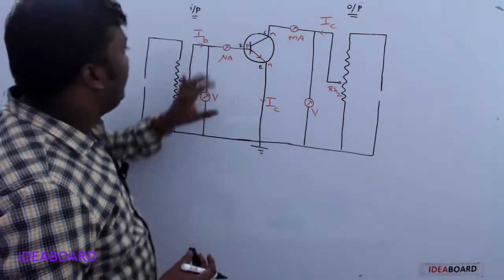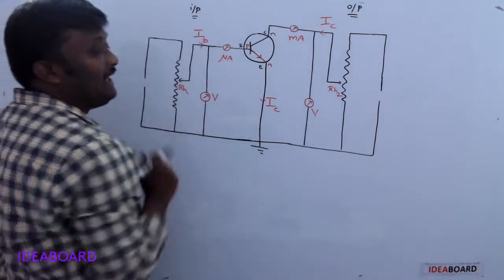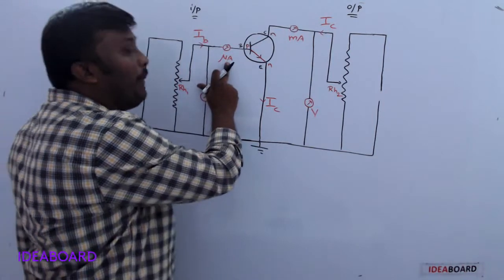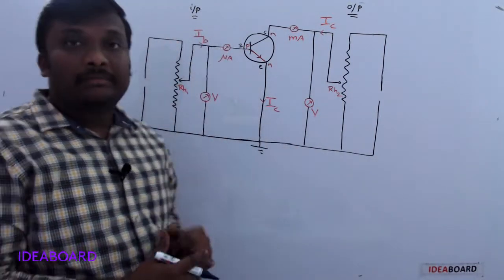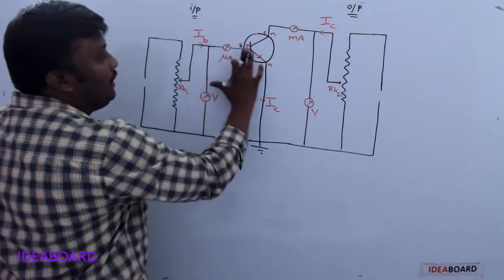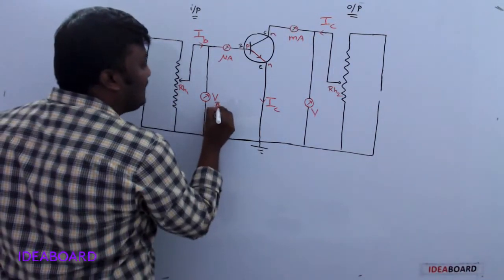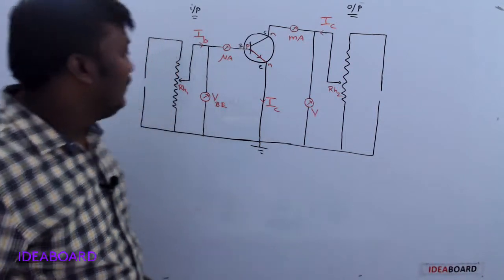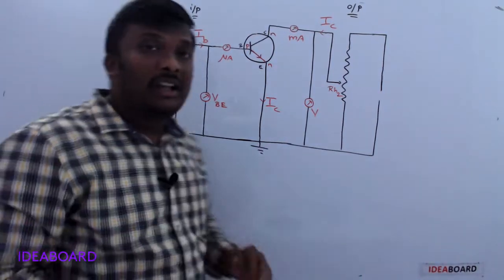In input characteristics, we give the relation between input current and input voltage. The input current is the base current IB. Since the base region is very thin, we use a microammeter to measure IB. Between base and emitter we measure voltage using a voltmeter, named VBE — voltage between base and emitter.